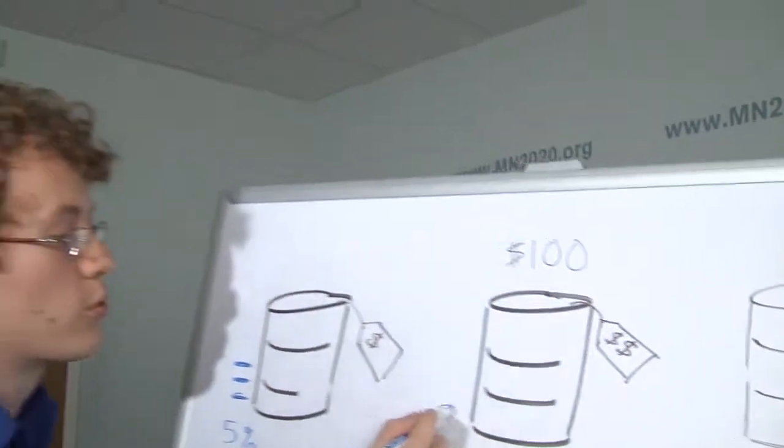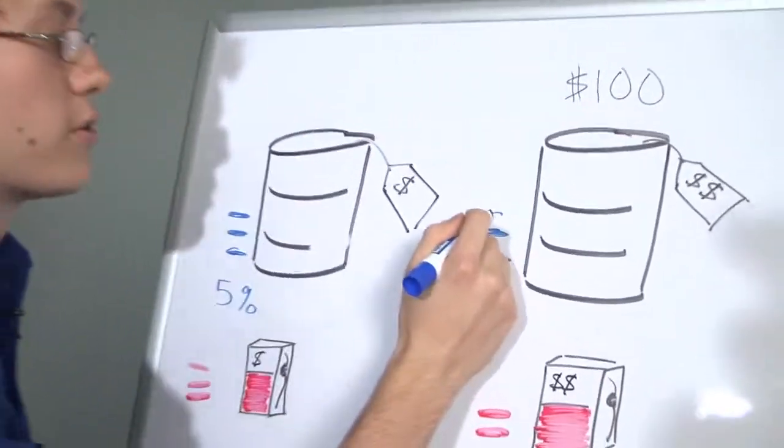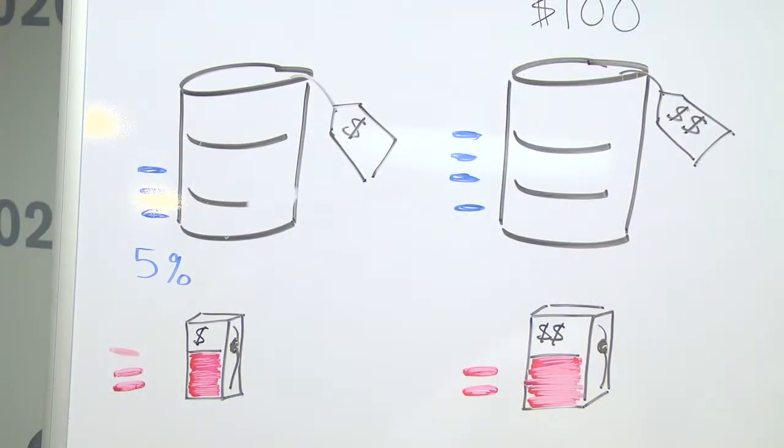When oil prices are mid-range, we would raise more revenue from the oil security fee, and we could keep gas taxes as they are now.